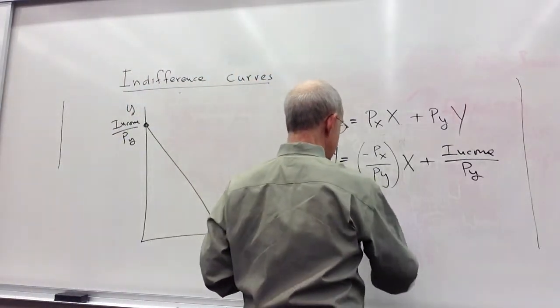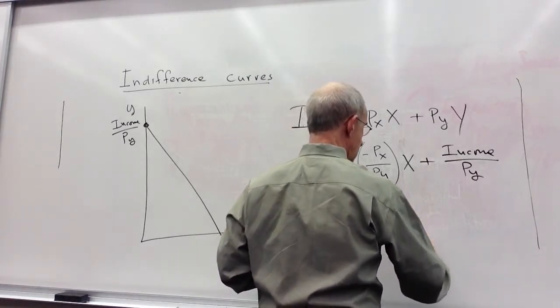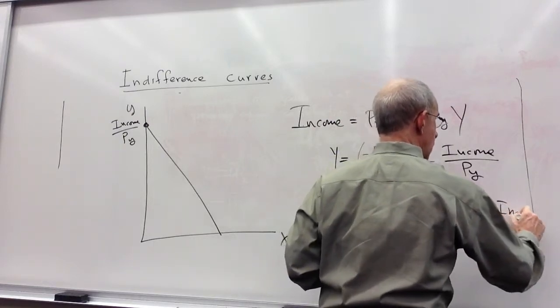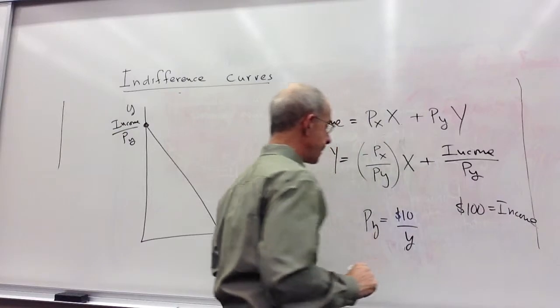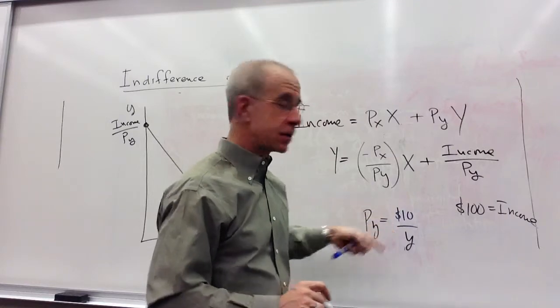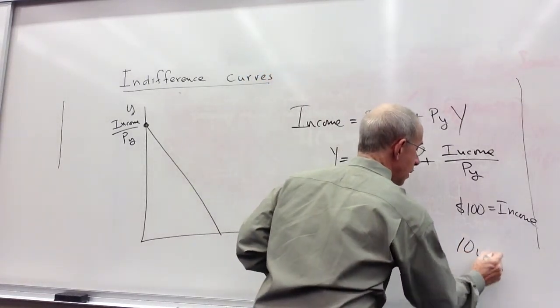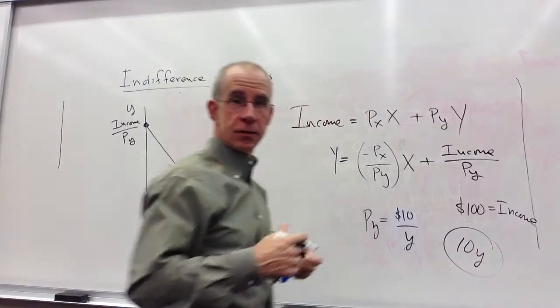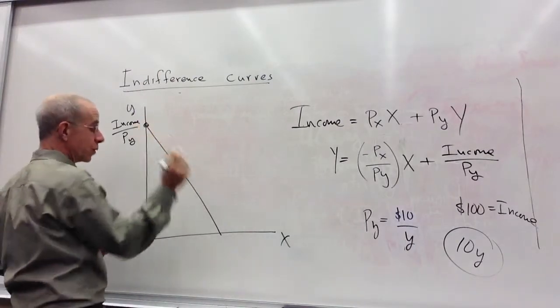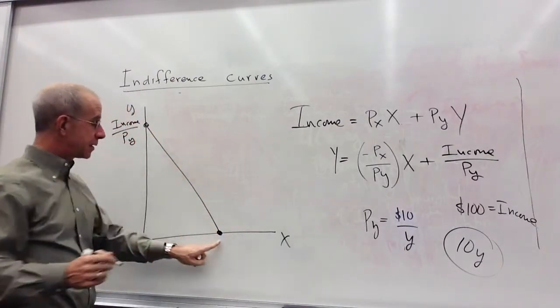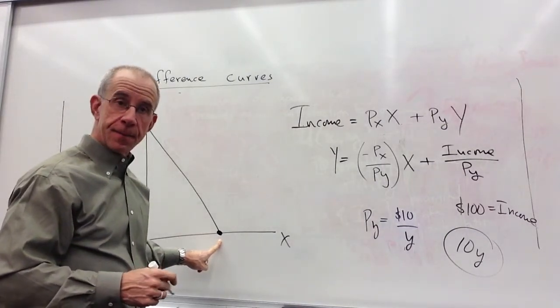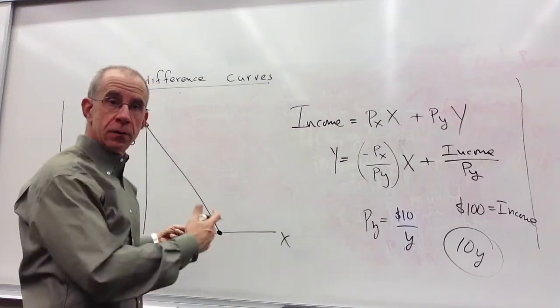Let's imagine that the price of y is $10 per unit of y and your income is $100. If you divide your income by this price, you can potentially purchase 10 units of y if that's the only thing that you buy. Similarly, this is the point of x that you could buy if you spent all of your income on x.